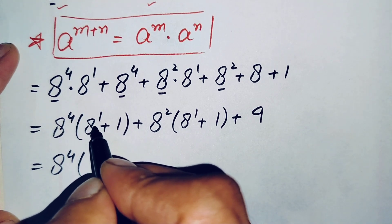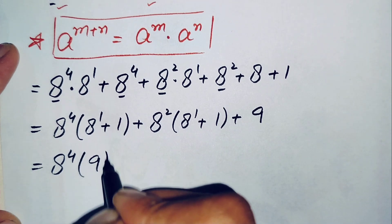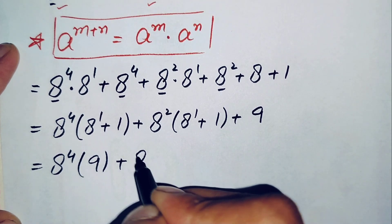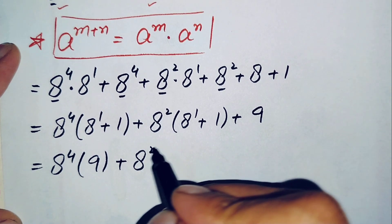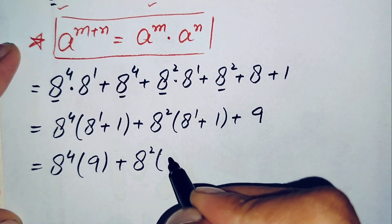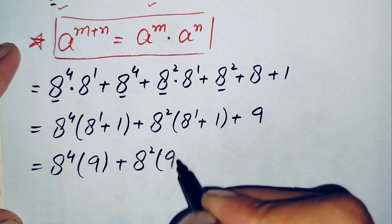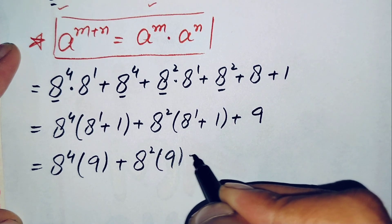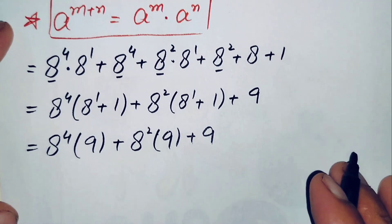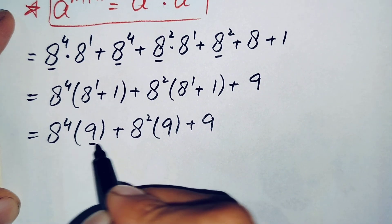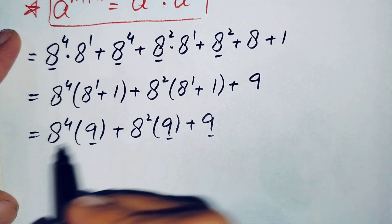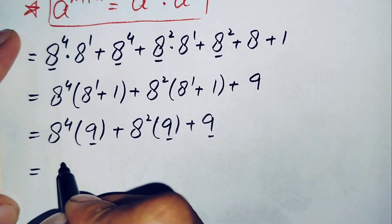This becomes x to the power 4 times (8+1) which is 9, plus x to the power 2 times (8+1) which is 9, plus 9. Now we will take 9 common from all the terms, since there is 9 in all the terms.